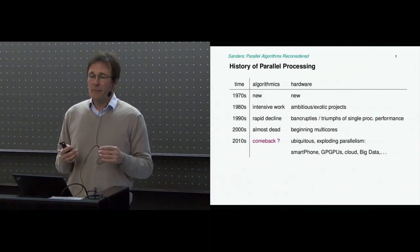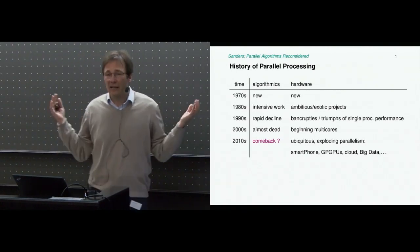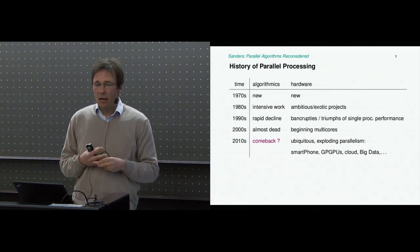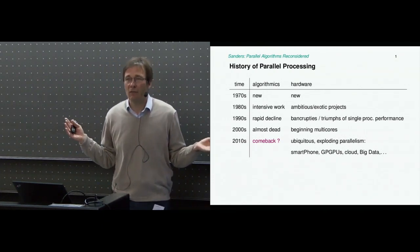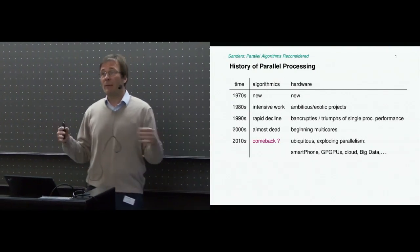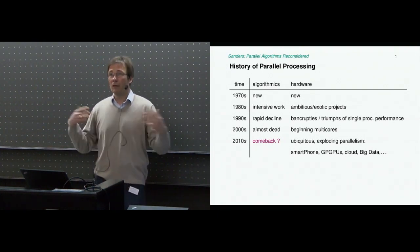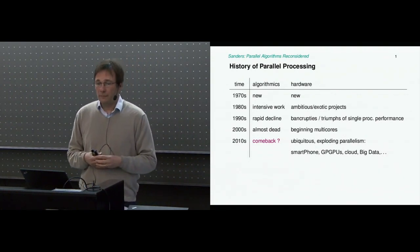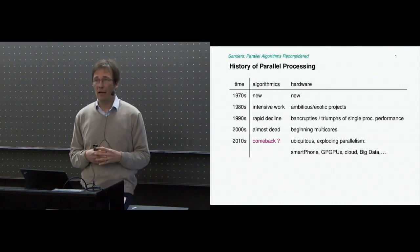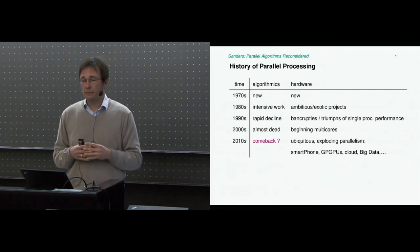If you look at the hardware at that time, there were very ambitious projects that we would now call exotic, like data flow machines—very exciting, but not really usable yet. Then what happened in the 1990s was, from the point of view of parallel processing, a catastrophe. There were lots of startups trying to build parallel machines, and all of them went bankrupt. Some survived as part of bigger companies; Cray may be an exception—they were basically rescued by American state-funded money. In the theory community there was a rapid decline in the 1990s of work on that subject, and in the 2000s it was practically dead.